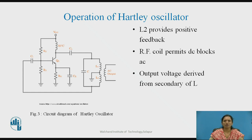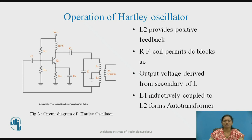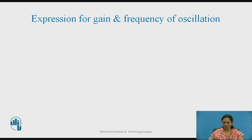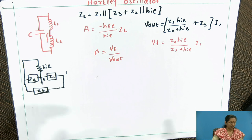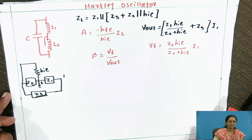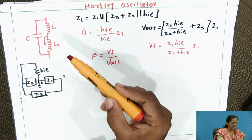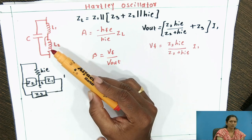The RF coil permits DC and blocks AC signal, and the output is taken across the inductor. To vary the frequency of oscillations, L1 and L2 are mutually coupled, and therefore they form an auto-transformer. The tank circuit is formed with L1, L2, and C.